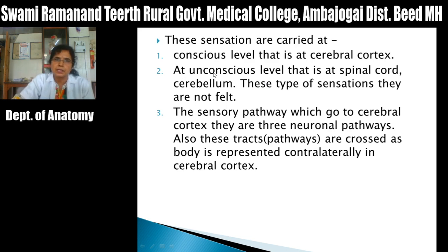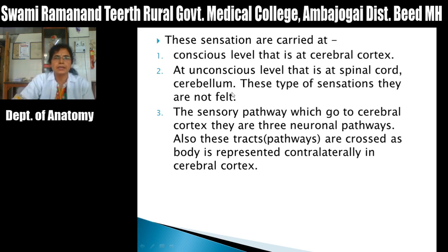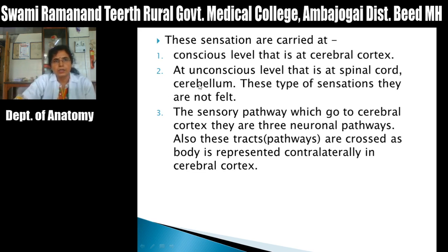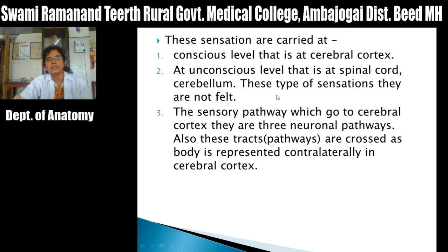For example, proprioceptive sensations are carried to the spinal cord for reflex muscular activity and also to the cerebellum for the maintenance of muscle tone. By maintaining muscle tone, the cerebellum allows the cerebral cortex to produce skillful, purposeful, coordinated movements. This type of sensation is not consciously felt.